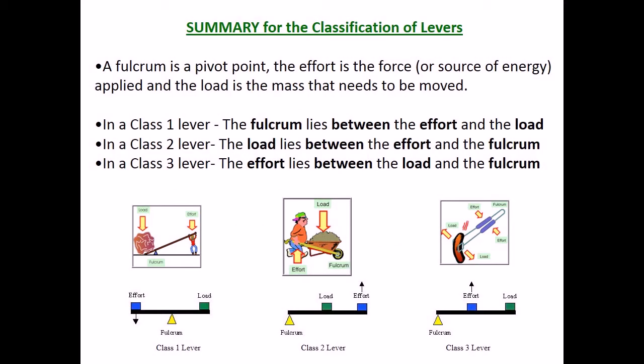Summary for the classification of levers. The fulcrum is a pivot point. The effort is the force or source of energy applied and the load is a mass that needs to be moved. In a class 1 lever, the fulcrum lies between the effort and the load. In a class 2 lever the load lies between the effort and the fulcrum. In a class 3 lever the effort lies between the load and the fulcrum.